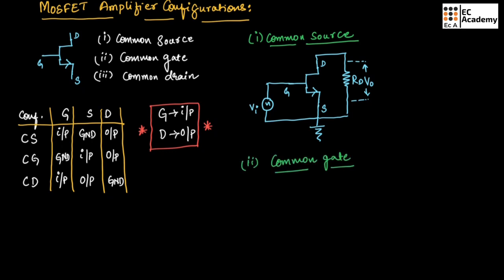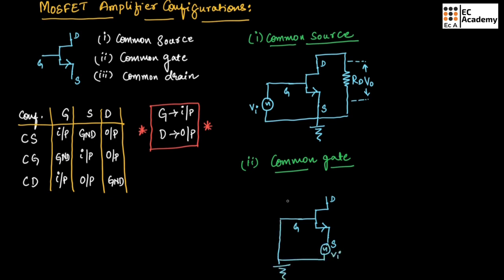In common gate configuration, the gate terminal is connected to ground, the source terminal is connected to input, and the drain terminal is connected to output. At the source we connect the input, and at the drain terminal we can measure the output. We connect a resistor RD, and across this resistor we will measure the output voltage. This is the general circuit for common gate configuration.